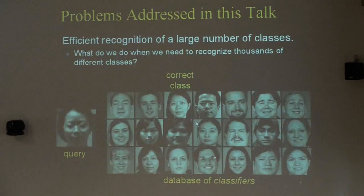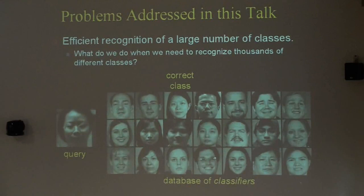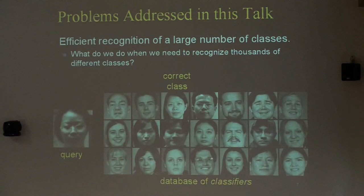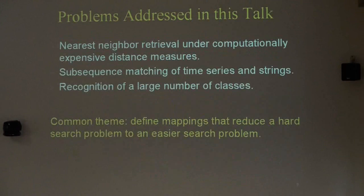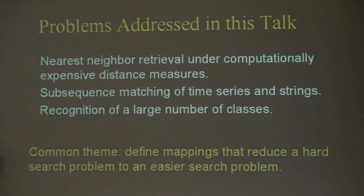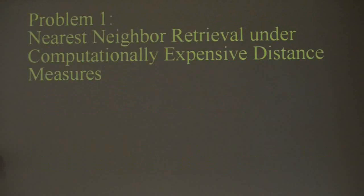The third part of the talk will present a method for efficient recognition in domains where you have thousands of different classes. For example, for the Google Images product, you might want a system that, whenever a face is detected, tries to recognize whether it's a certain celebrity — a politician, athlete, or actor. The list of possible people could easily run to the thousands or tens of thousands. The common theme in all three problems is that we describe mapping methods that reduce these hard search problems into easier problems with more straightforward solutions.